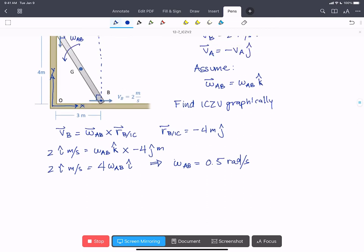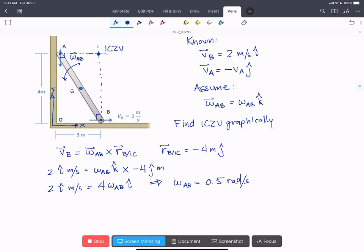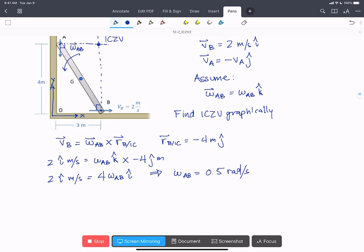So that angular velocity is true for the whole rigid body. Now if we want to find the velocity of G, what we need to do is draw a line between G and the ICZV. And perpendicular to that line, that'll be the direction of VG.